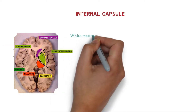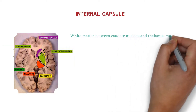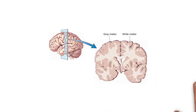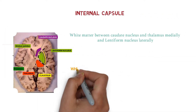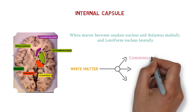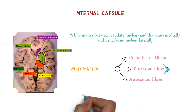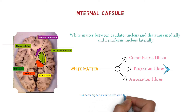Here we have the image of the internal capsule. It is white matter between the caudate nucleus and thalamus medially, while the lentiform nucleus is lateral. The caudate nucleus is highlighted in purple, thalamus in red, and lentiform nucleus in green. In white matter we have commissural fibers, projection fibers, and association fibers, but in the internal capsule we specifically have projection fibers, connecting higher brain centers like the cortex to lower centers like the brainstem.